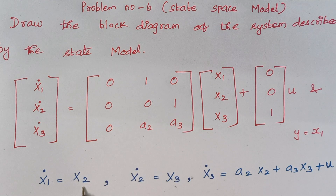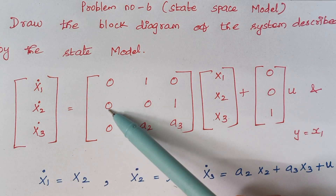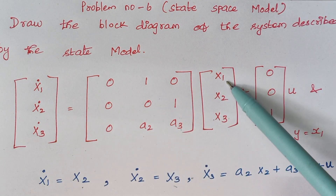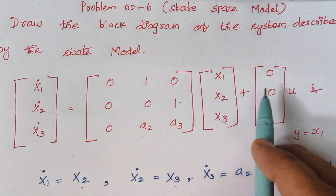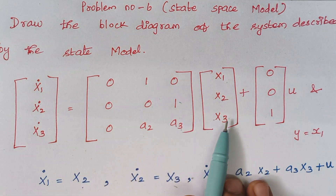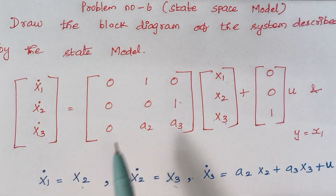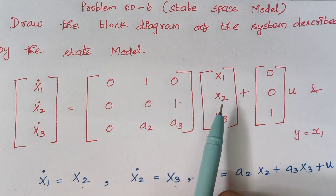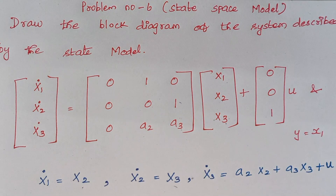That's just matrix multiplication. Next is x2_dot. When you look at x2_dot we consider this row: 0 into x1 is 0, 0 into x2 is 0, and 1 into x3 is x3. For x1_dot: 0 into x1 plus 1 into x2 plus 0 into x3 plus 0 into u, which is 0. Similarly for x2_dot: 0 into x1 plus 0 into x2 plus 1 into x3 plus 0 into u, which is again 0.